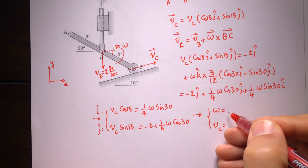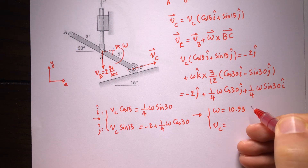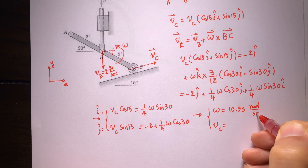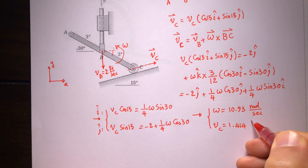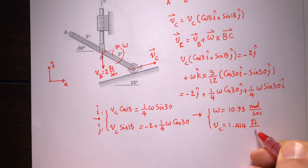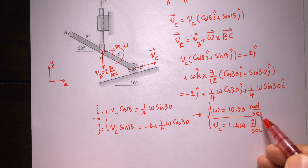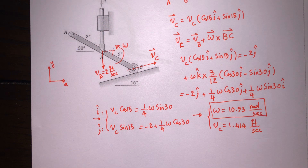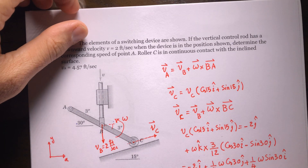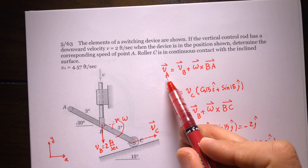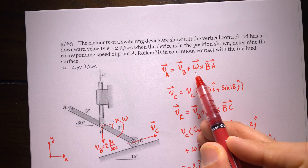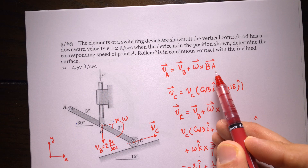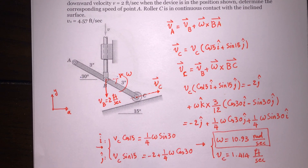Solving this system of two equations with two unknowns gives omega = 10.93 radians per second and VC = 1.414 feet per second. The important result for us is omega, because once we have omega we can substitute back into the original equation — velocity of A equals velocity of B plus omega cross BA — to find velocity of A.